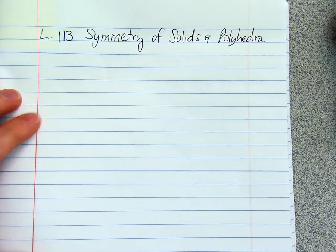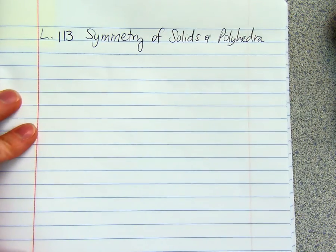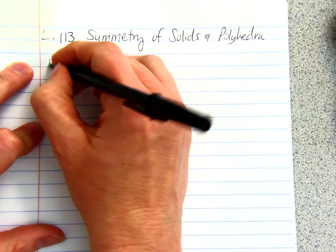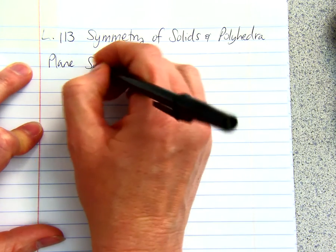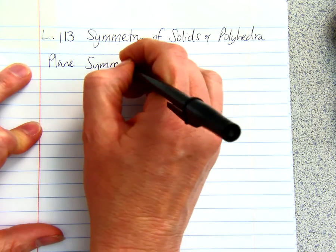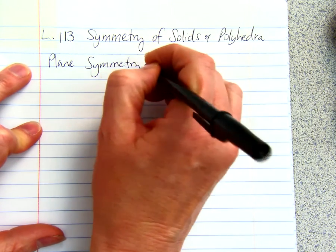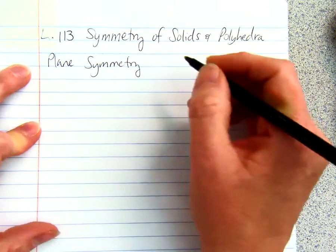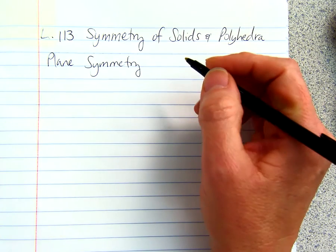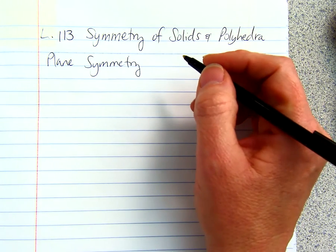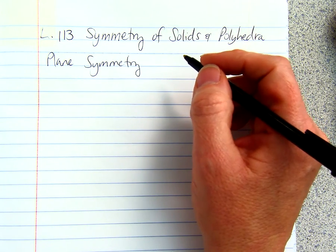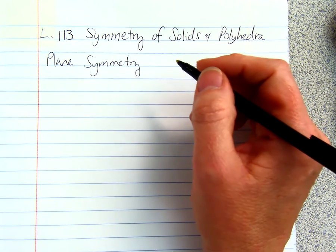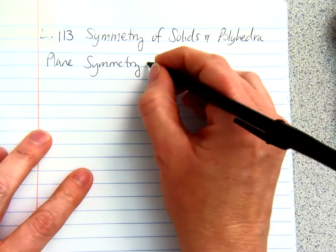So, something has plane symmetry when a 3D solid can be cut into two congruent halves.